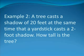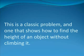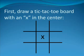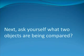Example 2. A tree casts a shadow of 20 feet at the same time that a yardstick casts a 2-foot shadow. How tall is the tree? This is a classic problem, and one that shows how to find the height of an object without climbing it. First, draw a tic-tac-toe board with an X in the center, just as we did in the previous example.